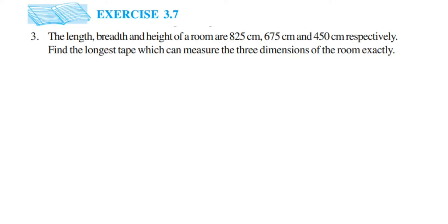There is a small hint given here: 'longest tape' means we want to find the highest common factor — the highest number which can divide all three dimensions. 'Exactly' means there should not be any remainder left; it should be exactly divisible. That is only possible by finding the highest common factor.